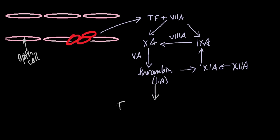Let's continue with the cascade. Thrombin then converts fibrinogen into fibrin. Fibrin monomers are then cross-linked by factor 13 to form a clot.